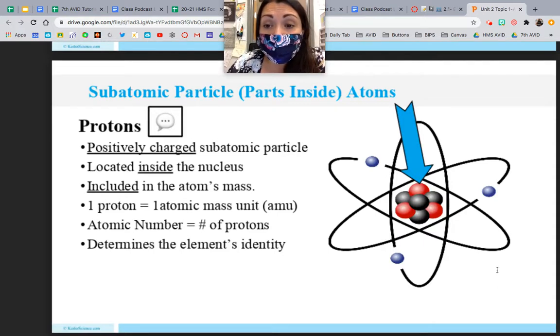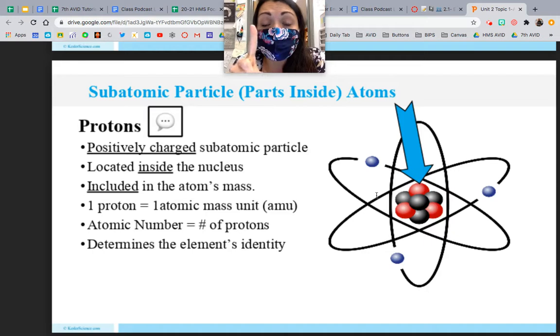Okay. So protons positively charged. They're inside the nucleus. They have an atomic mass of one and they're equal to the mass of a neutron and they determine the element's identity. Like I've talked about before, carbon has six protons. If it has seven, it's nitrogen. And if it has five, it's boron.